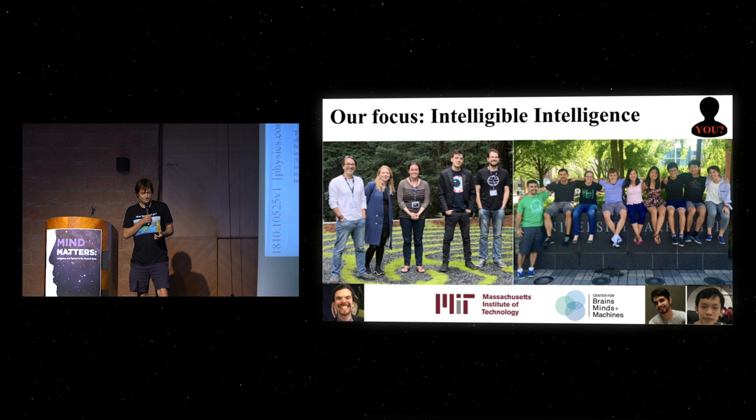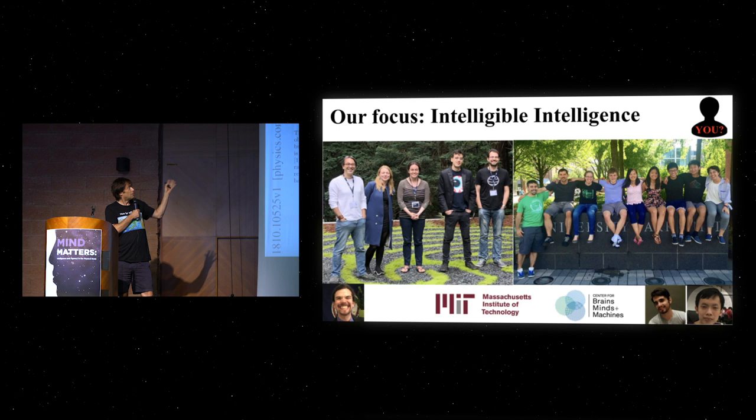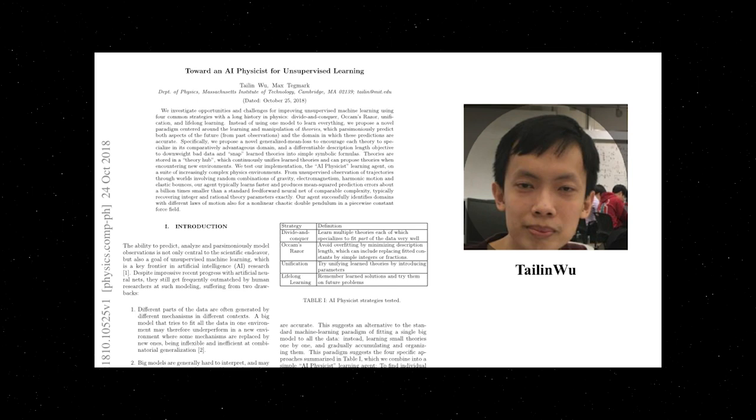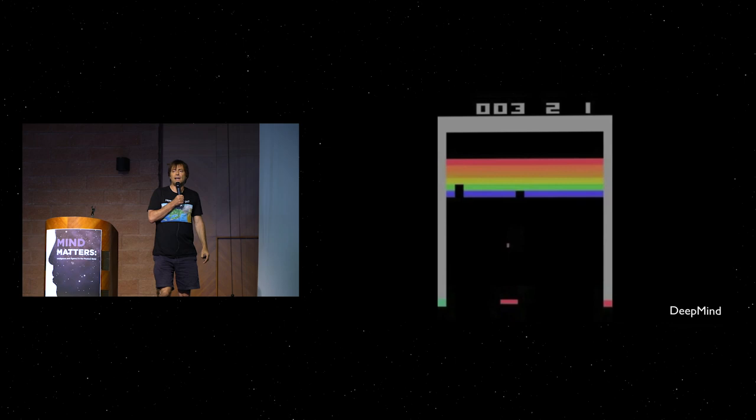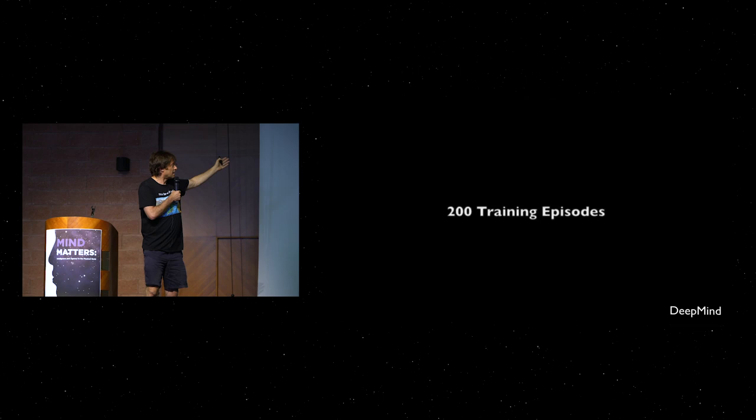Let's start with this paper spearheaded by my grad student Tylan Wu: Towards an AI Physicist for Unsupervised Learning. You can take a neural network and train it to do stuff that seems kind of smart. Raise your hand if you ever played this Atari game. In the beginning the AI totally sucks—it's just given the colors of the pixels and doesn't even know to hit the ball.